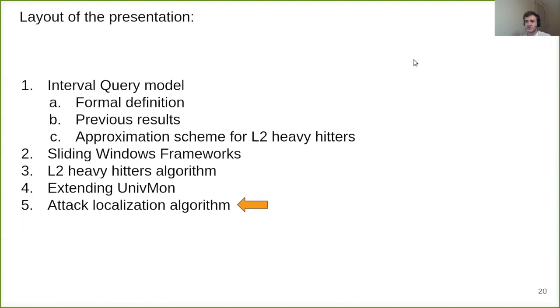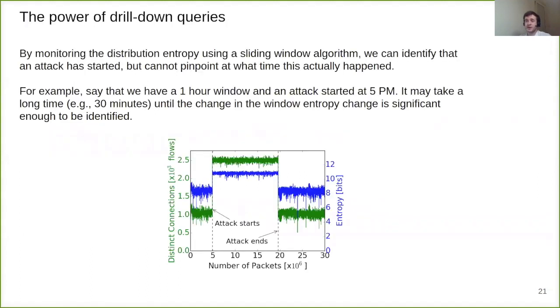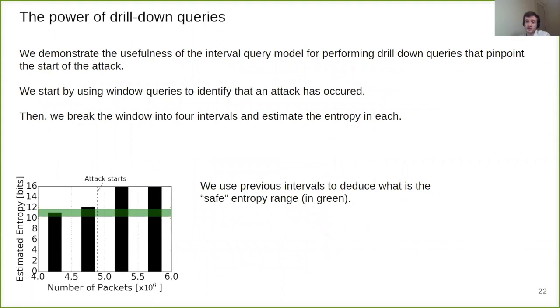Now we move to the attack localization algorithm details. As previously mentioned, by monitoring the distribution entropy using only sliding window algorithm, we can identify that attack has started, but we cannot drill down the queries and understand when exactly it happened. For example, say we have one hour window and an attack started at 5pm, it might take a pretty long time, half an hour, until the change in the window entropy changes significantly enough to identify the attack. And that would be the most precision we can get to identify the start time, half an hour.